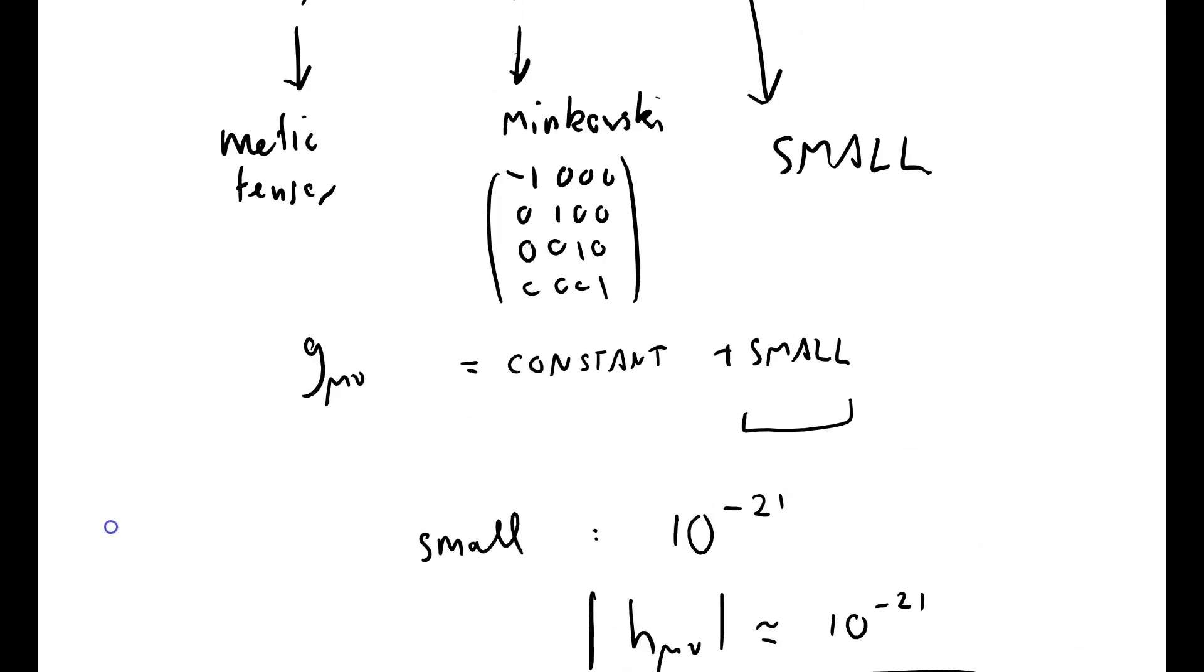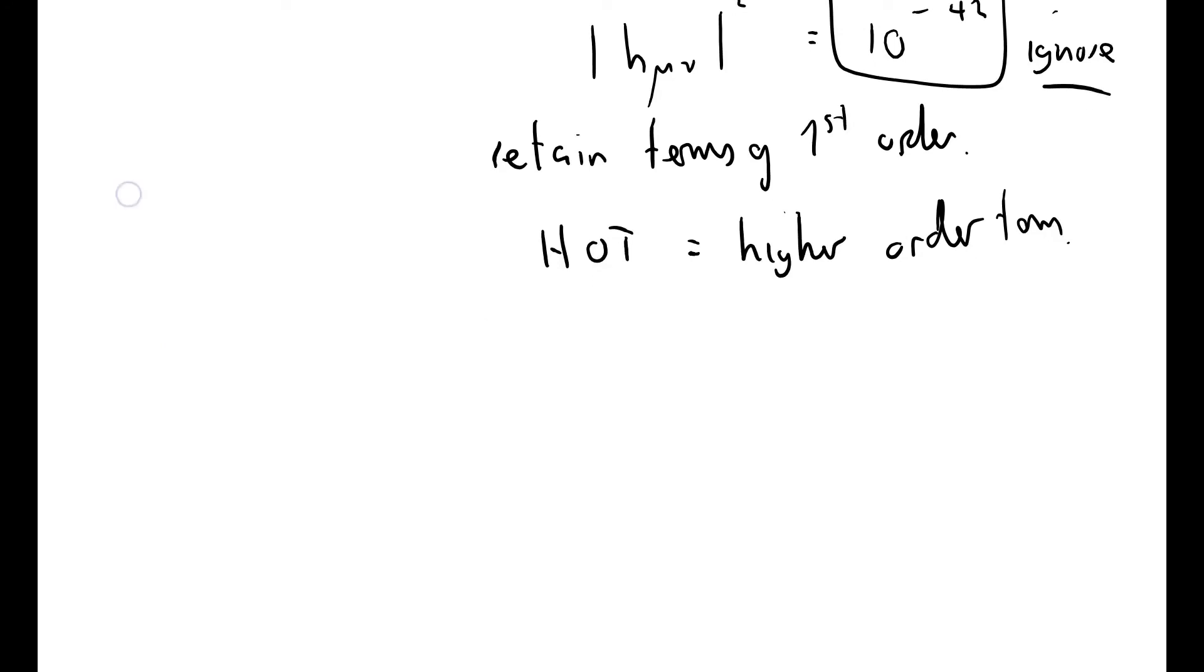Okay, so what can we say? We've got the metric tensor as a constant plus something small. And what I'm going to do is I'm going to write that again, g_μν equals η_μν plus something small.